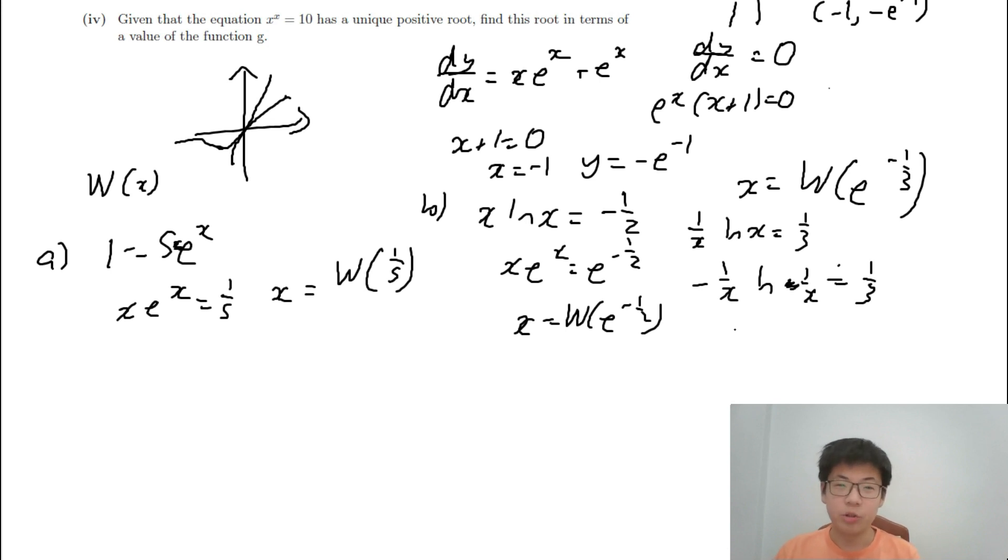So 1/x * e^(1/x) = e^(-1/3). And then the equation just becomes W(e^(-1/3)). Well, that's it for this video and see you in another step video.